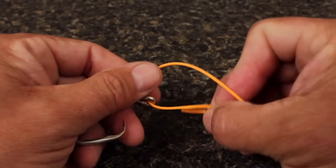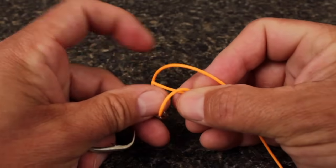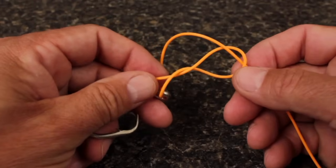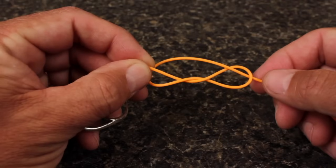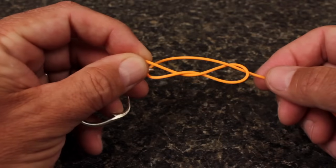Then bring the tip of the tag up through the loop and get hold of it with the thumb and index finger of your left hand. This is the shape you're looking for, sort of a modified figure eight.